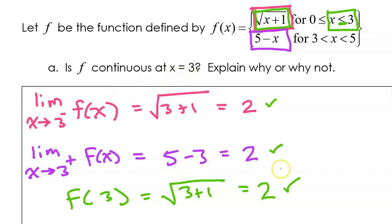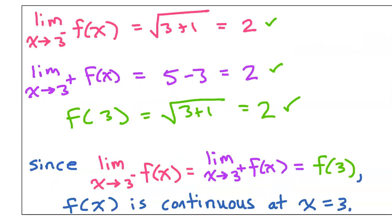In conclusion, we can say: since the limit as x approaches 3 from the left equals the limit as x approaches 3 from the right, which equals the value of the function at 3, then f(x) is continuous at x equals 3.